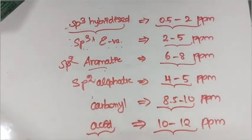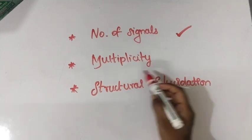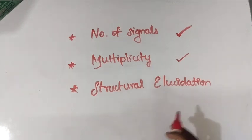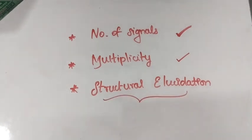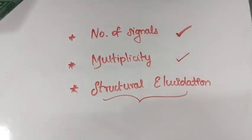In the next video, we will try to calculate the number of signals and multiplicity. If you know how to find the number of signals and multiplicity, and you know the chemical shift values, then it is quite easy to elucidate the structure. In competitive exams like JAM, NET, and GATE, they will give you some data and with the help of chemical shift values and multiplicity, you have to find the structure. Organic spectroscopy is very easy if you know these things. If you liked this video, try to share it with your friends. Stay tuned — thank you so much for watching.